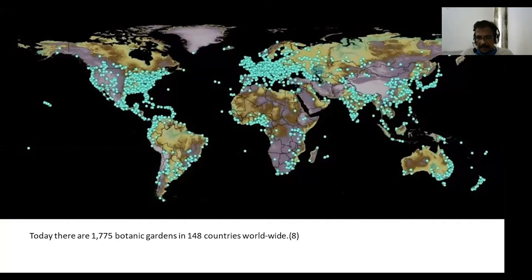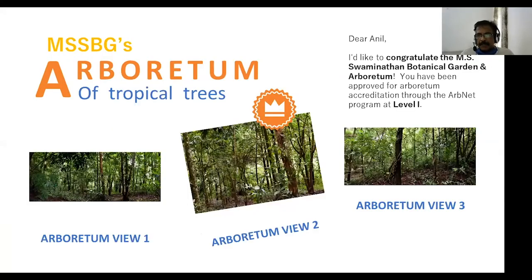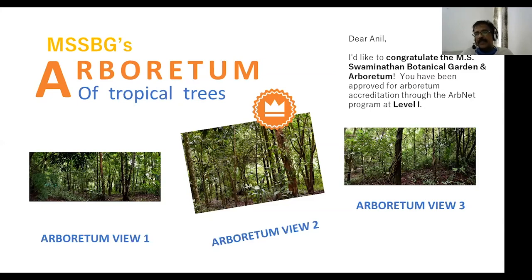The BGCI recognition is not a simple recognition. We also recently received arboretum recognition — they have a four-level recognition system. We currently hold Level 1; our aim is to reach Level 4, which requires a scientifically maintained garden with more than 500 RET tree species. We currently have around 100 RET tree species, so we will work towards eventually achieving that level of recognition.